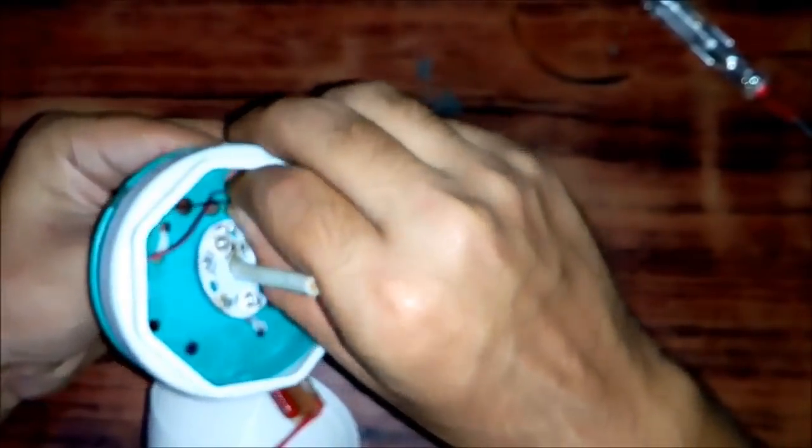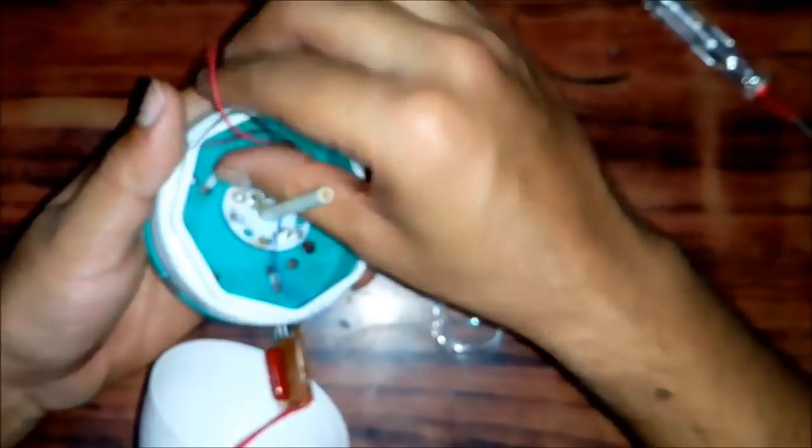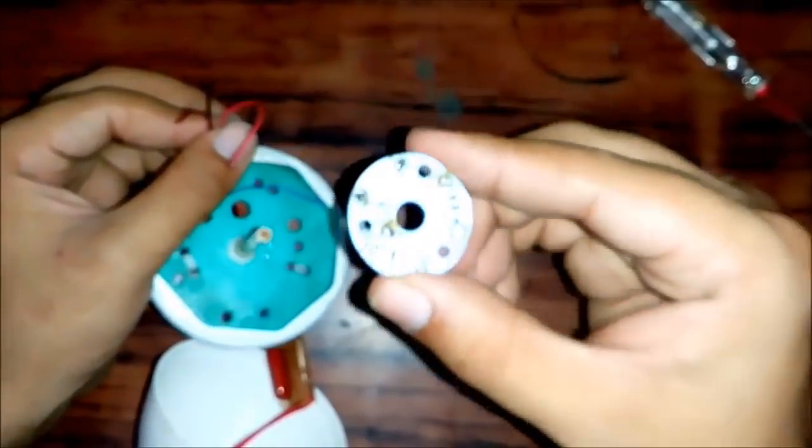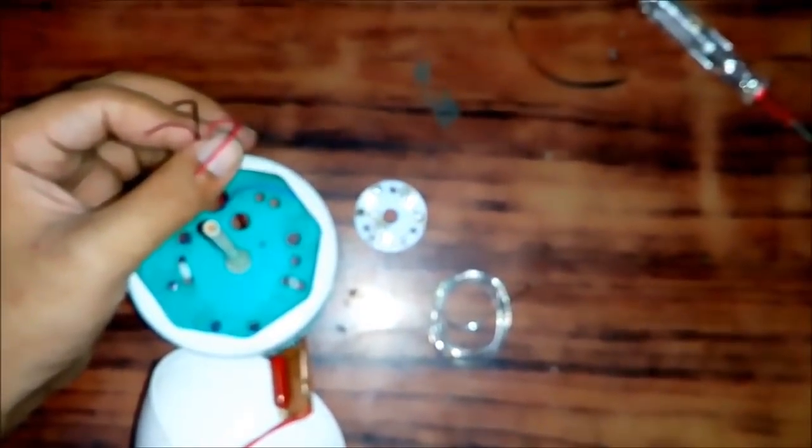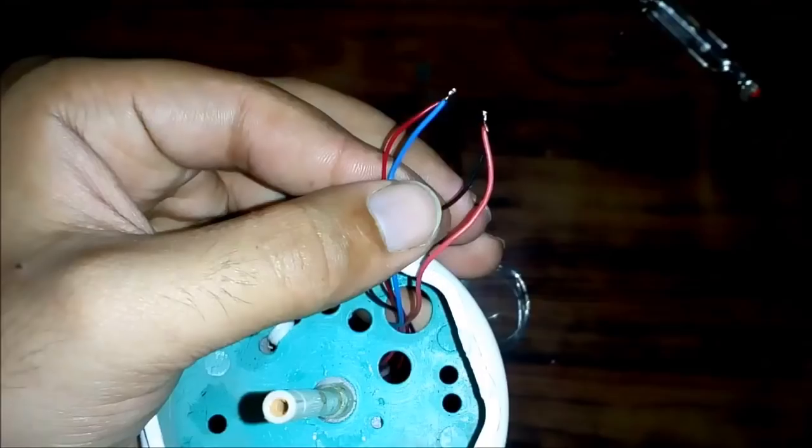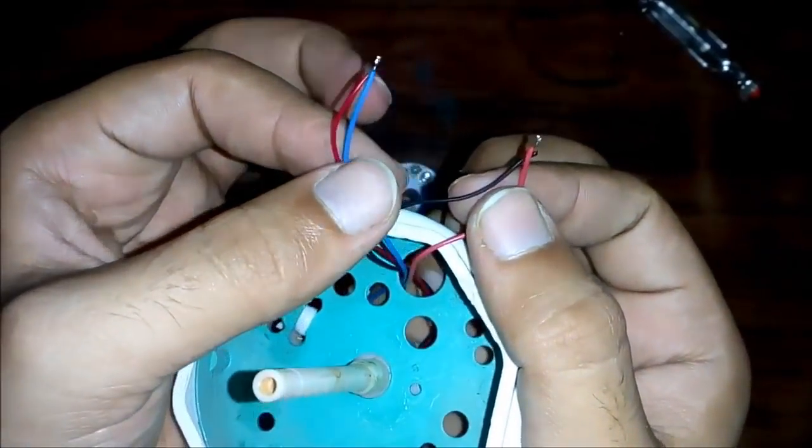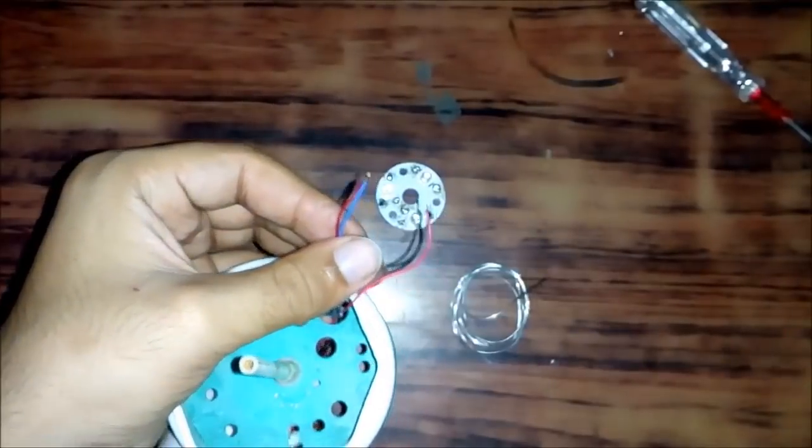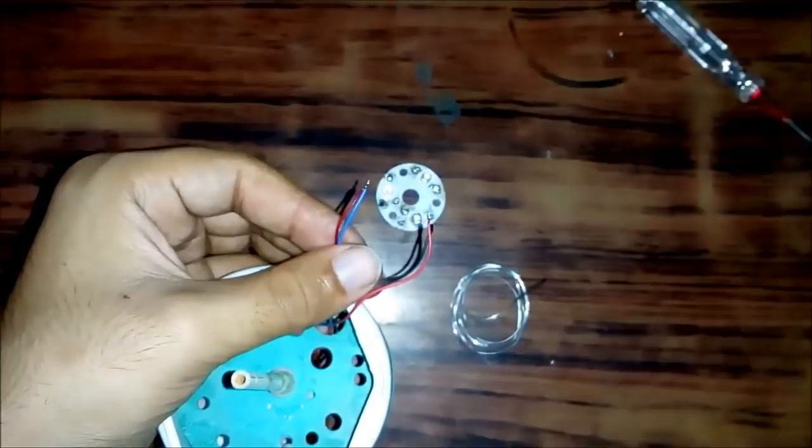We will add the motor and this output power supply in parallel and then we will solder it on this LED. So let me connect them in parallel. So now I have connected motor and the power supply in parallel and now I will solder these inputs to the LED.